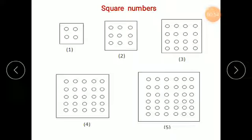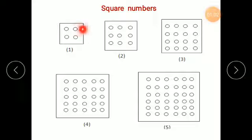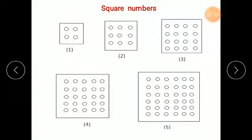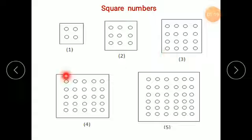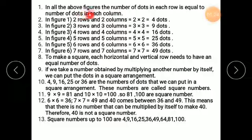What are square numbers? All these are dots arranged in rows and columns. The number of dots in a row is equal to the number of dots in a column. So they have equal numbers of rows and columns. Here: 2 rows, 2 columns; 3 rows, 3 columns; 4 rows, 4 columns; 5 rows, 5 columns; and 6 rows, 6 columns. In all the above figures, the number of dots in each row is equal to number of dots in each column.